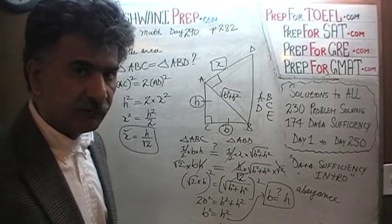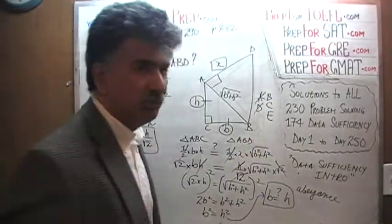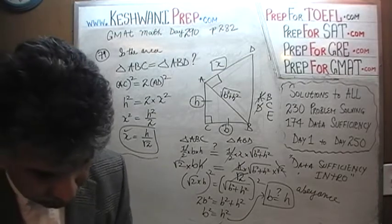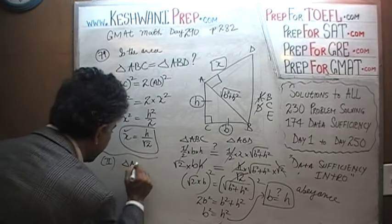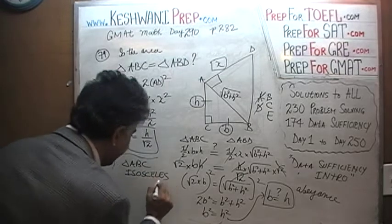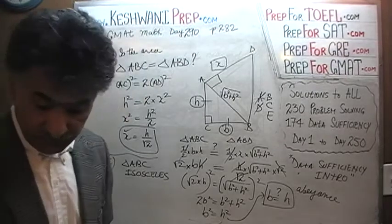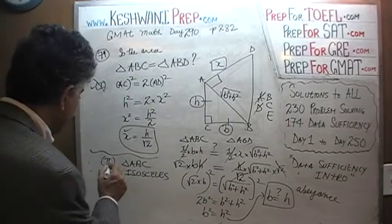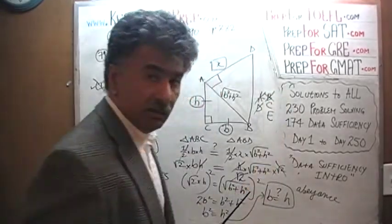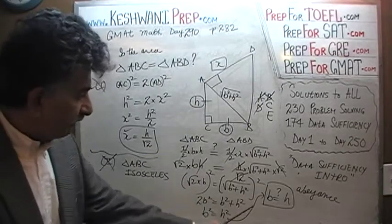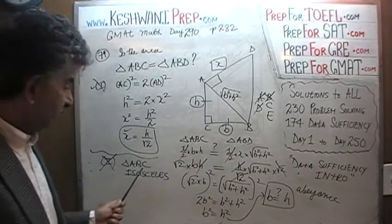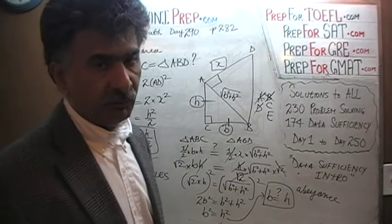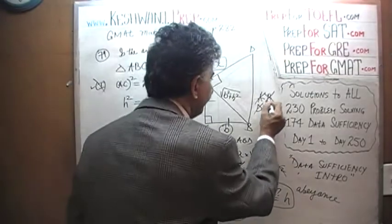Because the first statement by itself is not enough, the answer cannot be A or D — it has to be B, C, or E. The second statement tells us that triangle ABC is an isosceles triangle. Simply knowing that the bottom triangle is isosceles, by itself, does not enable us to establish whether the areas of the two triangles are equal. Second statement by itself is not enough, so the answer cannot be B. But when we put the two statements together, we are done — because the second statement tells us these two sides are equal, which is exactly what we needed. The answer is C.